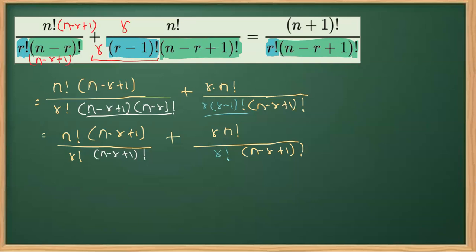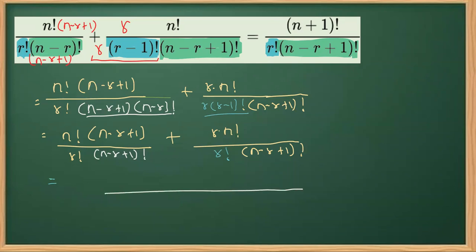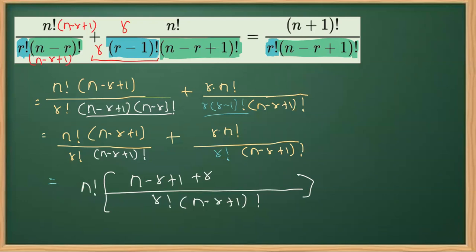Now we'll take LCM. What is common here? We have N factorial as common in the numerator, and the denominator is the same, so there is no need to take common separately — we can straight away take LCM. Taking LCM gives us R factorial into (N minus R plus one) whole factorial. Taking N factorial as common, we get (N minus R plus one) plus R. The minus R and plus R get cancelled, so in the next step we are getting N plus one multiplied by N factorial in the numerator.